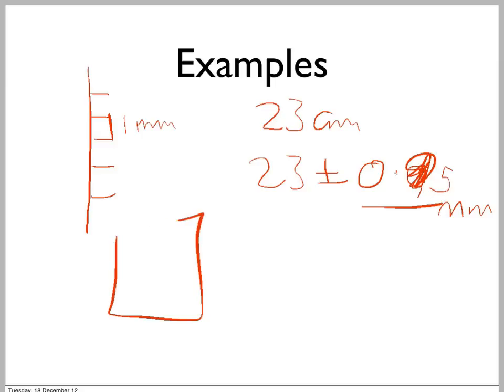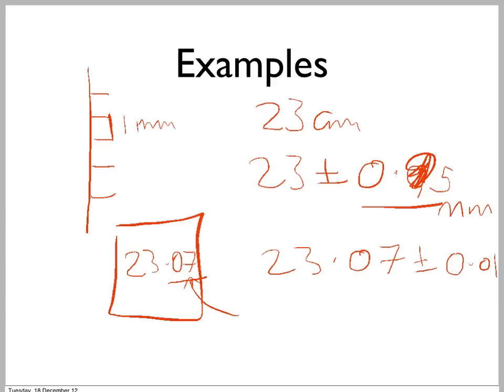If you have a digital meter, which tells you 23.07, the last digit is the uncertainty. So your value will be 23.07 plus or minus 0.01. 0.01 being the digit where the last uncertainty is. So that's the general rule.